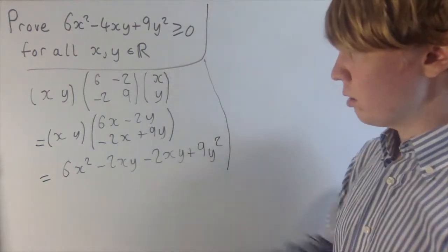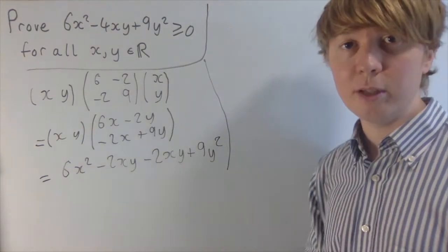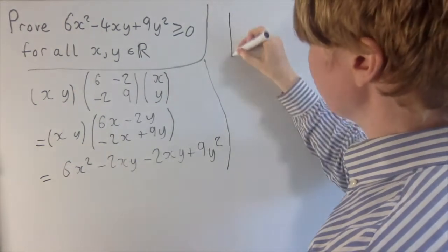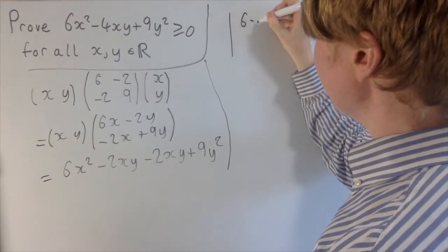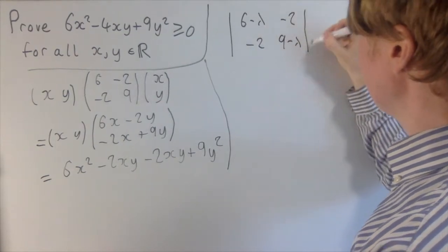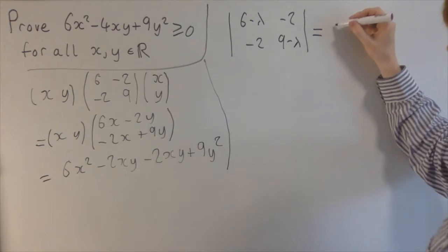And then what we're going to do is we're going to diagonalize this matrix as our next step. So I'll start by finding the eigenvalues. So we look for the determinant: 6 minus lambda, minus 2, minus 2, 9 minus lambda. We want to find which values of lambda is this equal to 0.